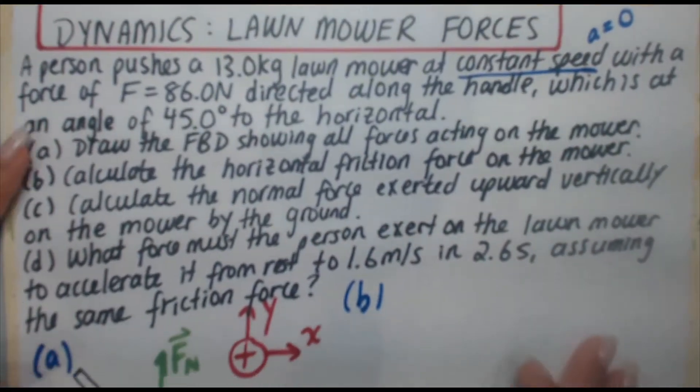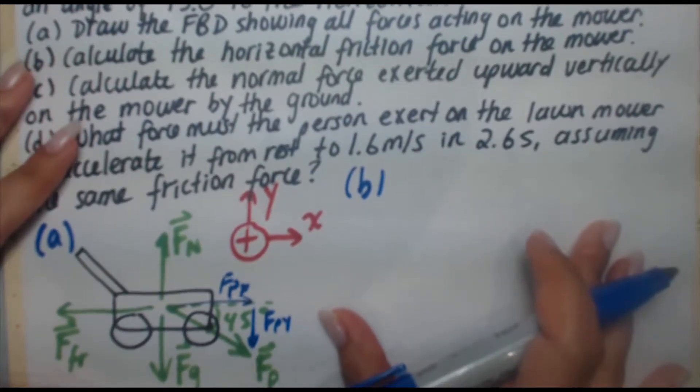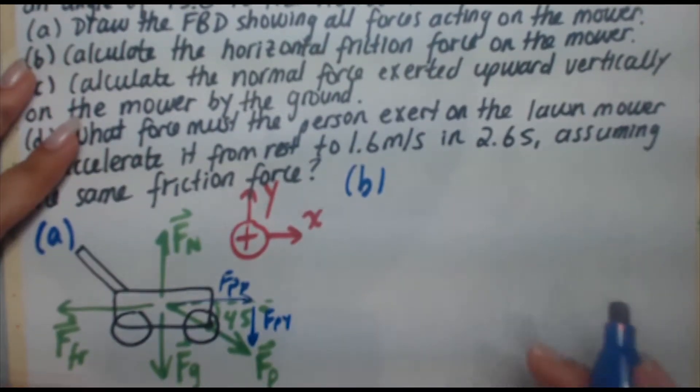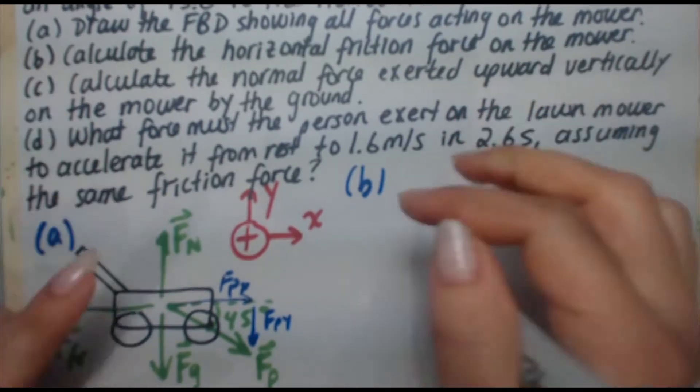Constant speed implies that acceleration is equal to zero. And like I said in the earlier videos, that simplifies your problem a lot. And that's really necessary for a problem like this where it's long in general.